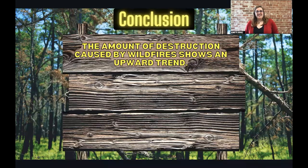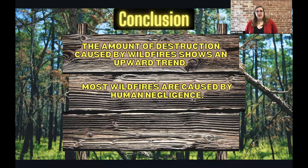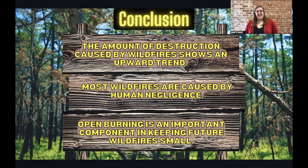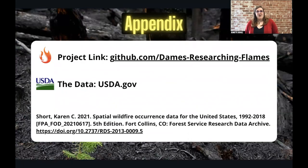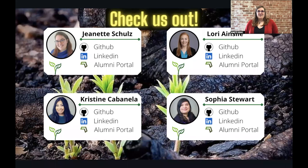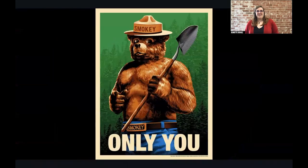Thank you, Christine. In summary, the number of wildfires has only slightly increased over the years, but the amount of destruction caused by wildfires is showing a significant upward trend. Most wildfires are caused by human negligence, which means we can stop the cycle. And lastly, open burning when done safely is an important component in keeping future wildfires small, and we encourage everyone who does open burn to do so responsibly. If you'd like to investigate this data yourself or dive further into our research, you can find that here in our appendix. If you enjoyed our team, you can find the links to our individual projects and profiles here. And lastly, remember, only you can prevent wildfires. Thank you so much.